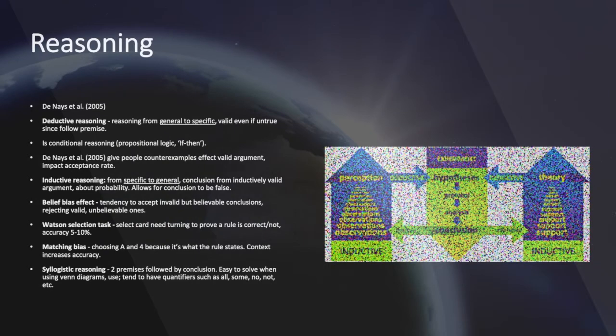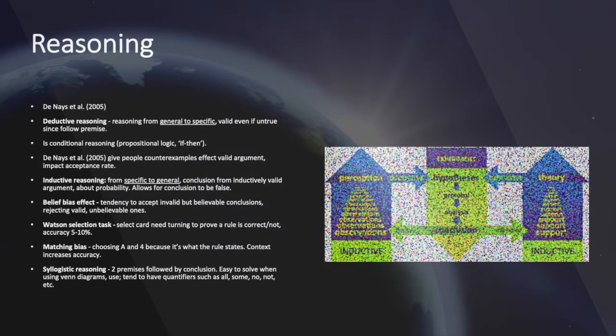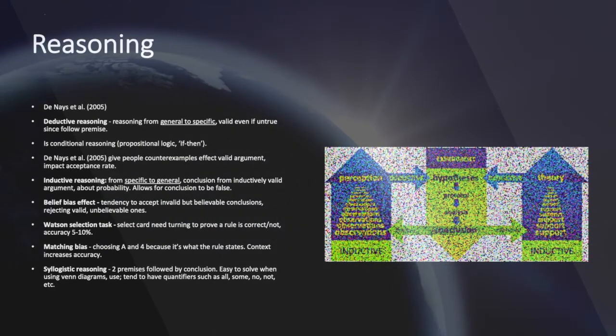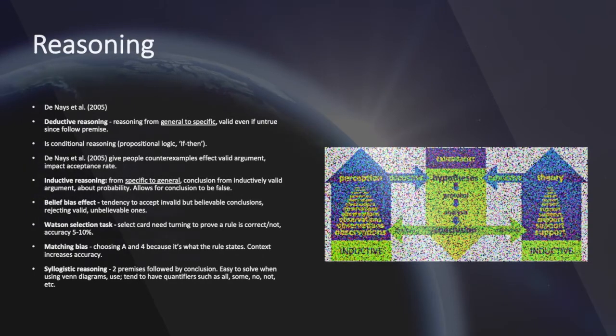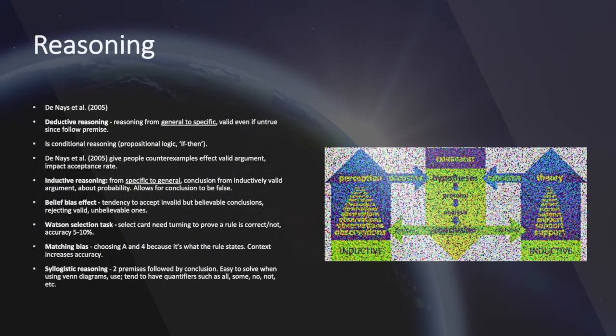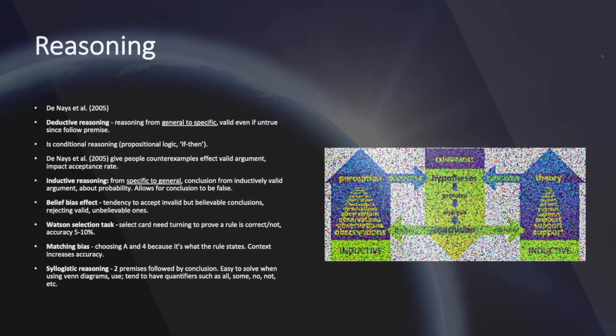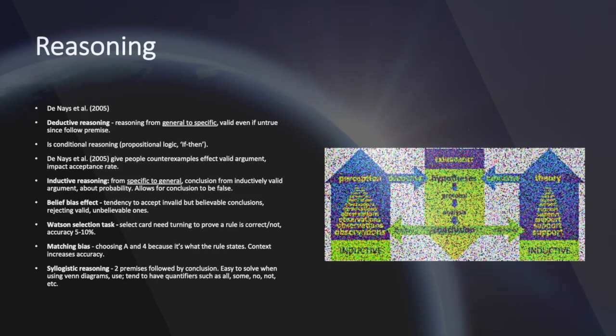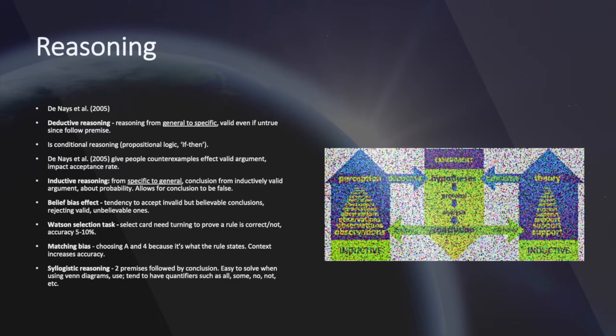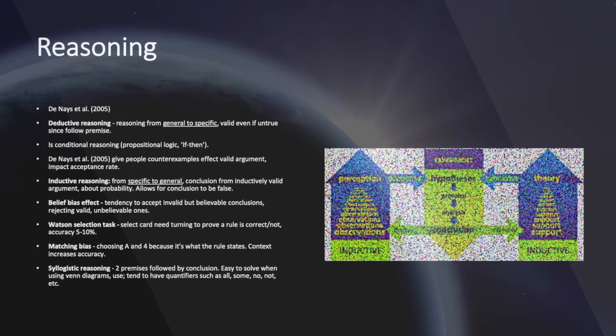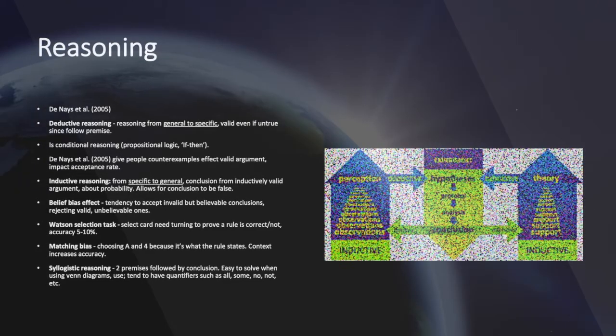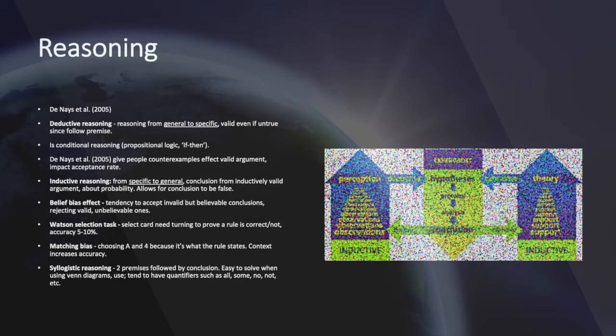Belief bias effect is defined as the tendency to accept invalid but believable conclusions and rejecting valid unbelievable ones. Watson selection task got participants to select cards based on turning to prove whether the rule is correct or not. Individuals, however, are only accurate 5 to 10 percent of the time.